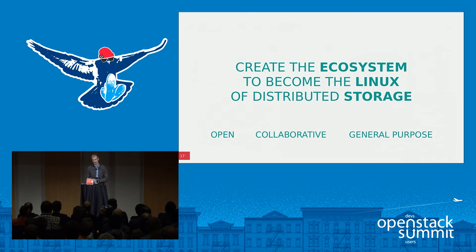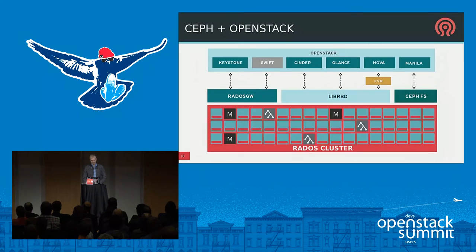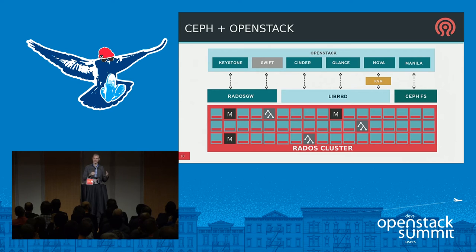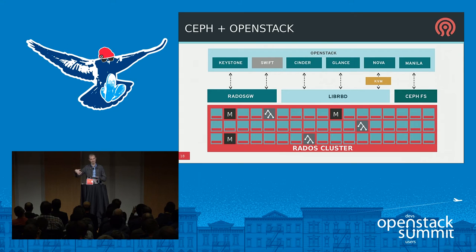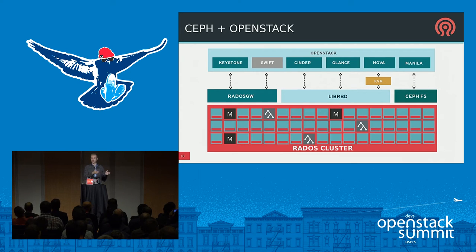Ceph and OpenStack get along very well. On the object side, RADOS Gateway talks to Keystone for authentication and provides S3 and Swift APIs. On the block side, we have drivers for Cinder and Glance for managing images, and Nova knows how to start KVM instances backed by virtual disks in Ceph. A new Manila driver lets you orchestrate file volumes stored in CephFS and plumb them through to virtual machines. But Cinder is really where Ceph and OpenStack have shined.